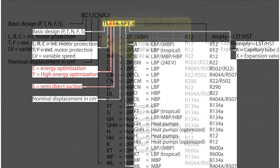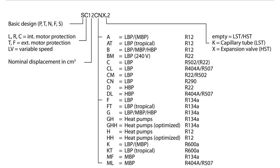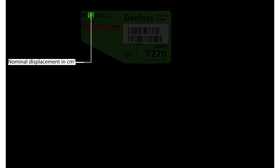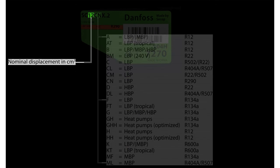We'll now return to our first model number. The next digit, which may be the third, fourth, or fifth in the model number, signifies the compressor displacement in cubic centimeters. This may be one or two digits and may include a decimal point.